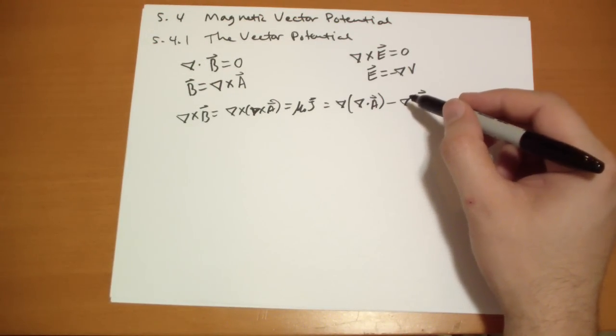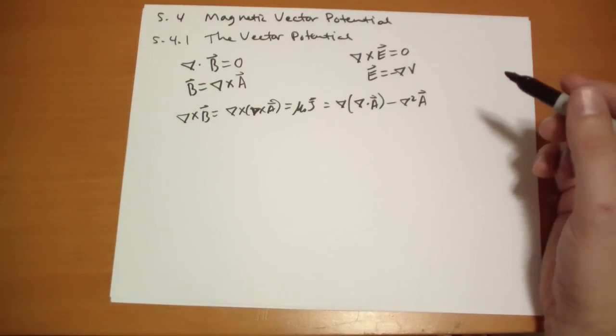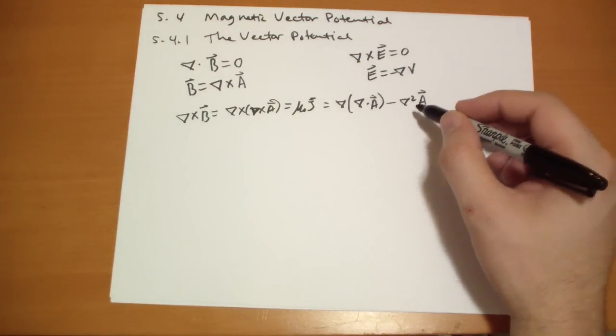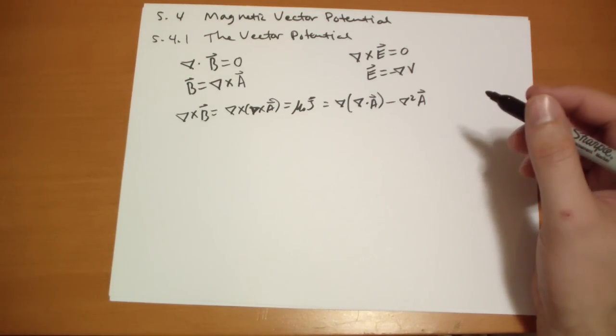So it's the Laplacian of the x component, plus the Laplacian of the y component, plus the Laplacian of the z component, of the k component, in those directions, respectively. And keep in mind, if you're doing spherical coordinates, things get a little weird. So you can't simply just do what I'm going to do here.